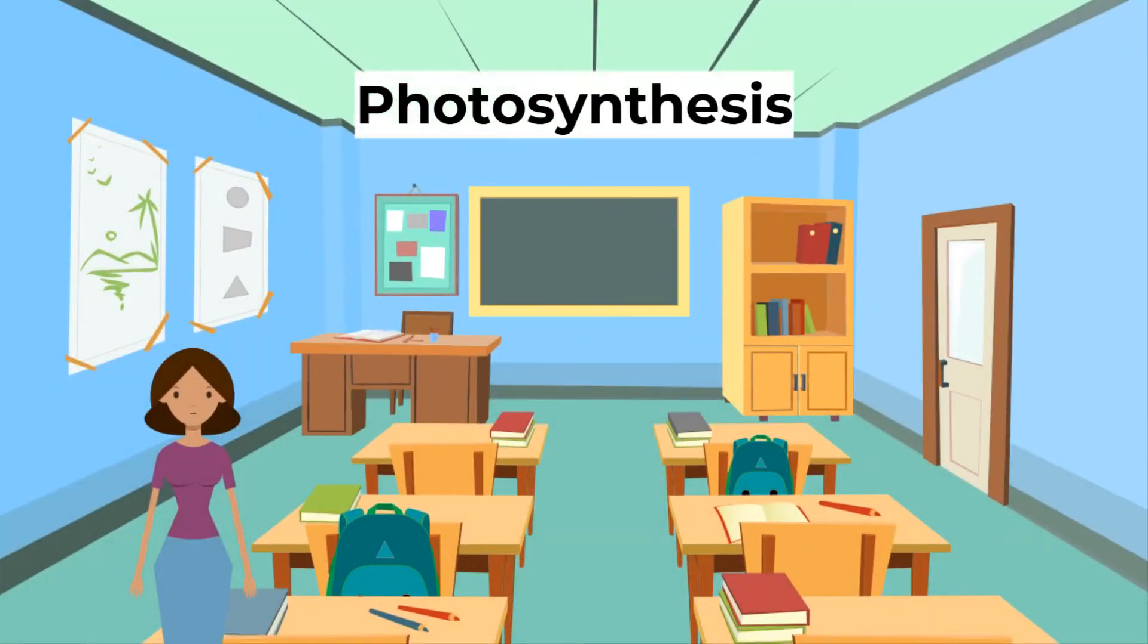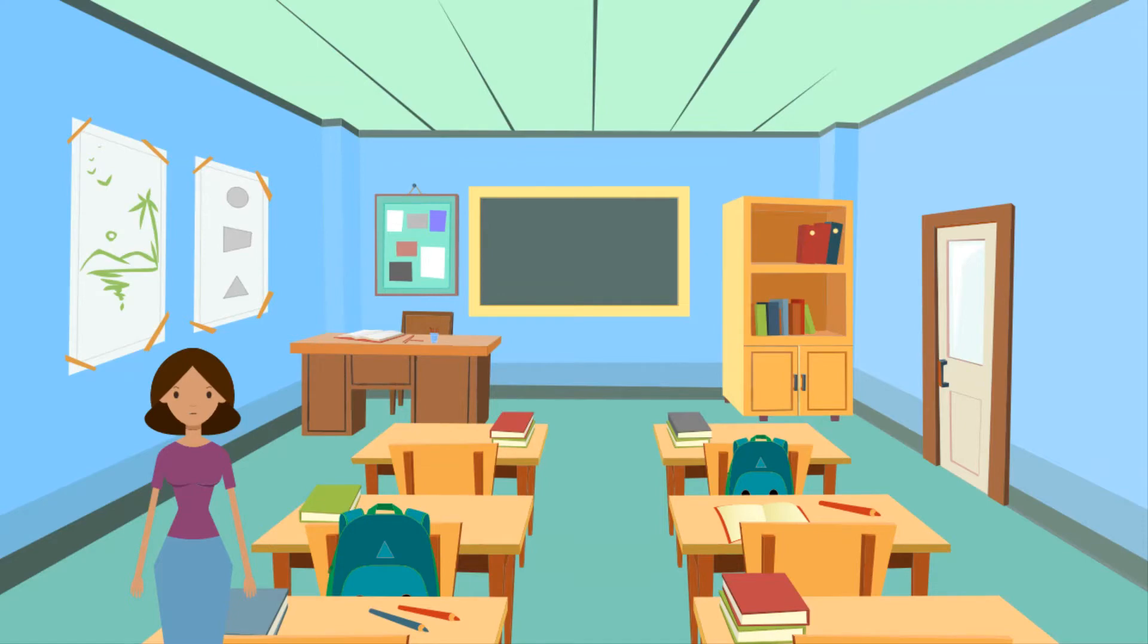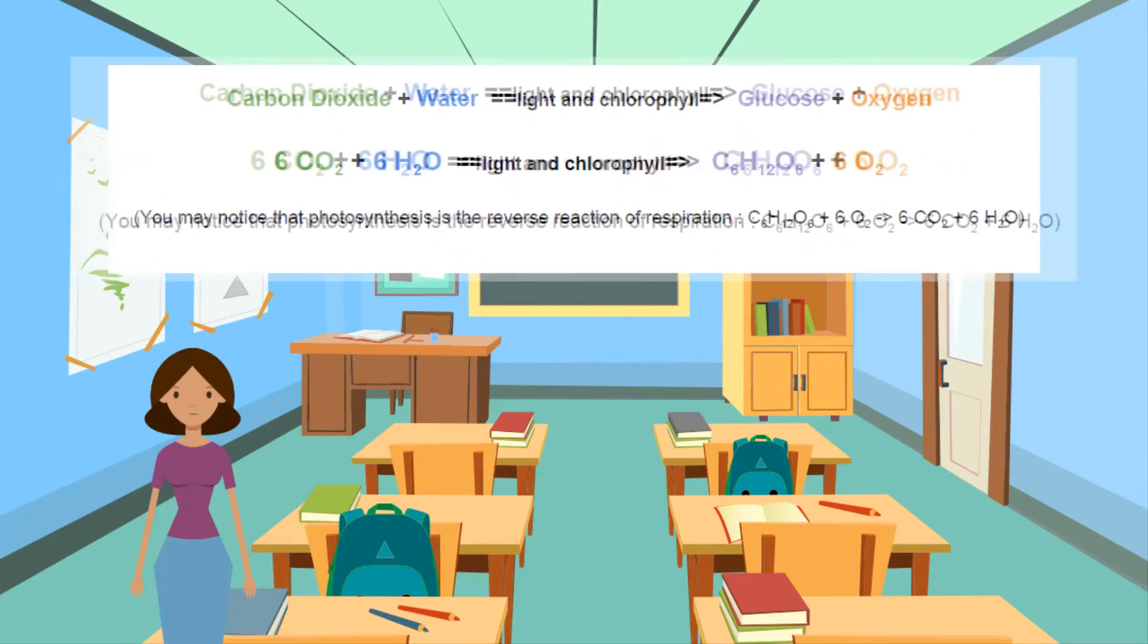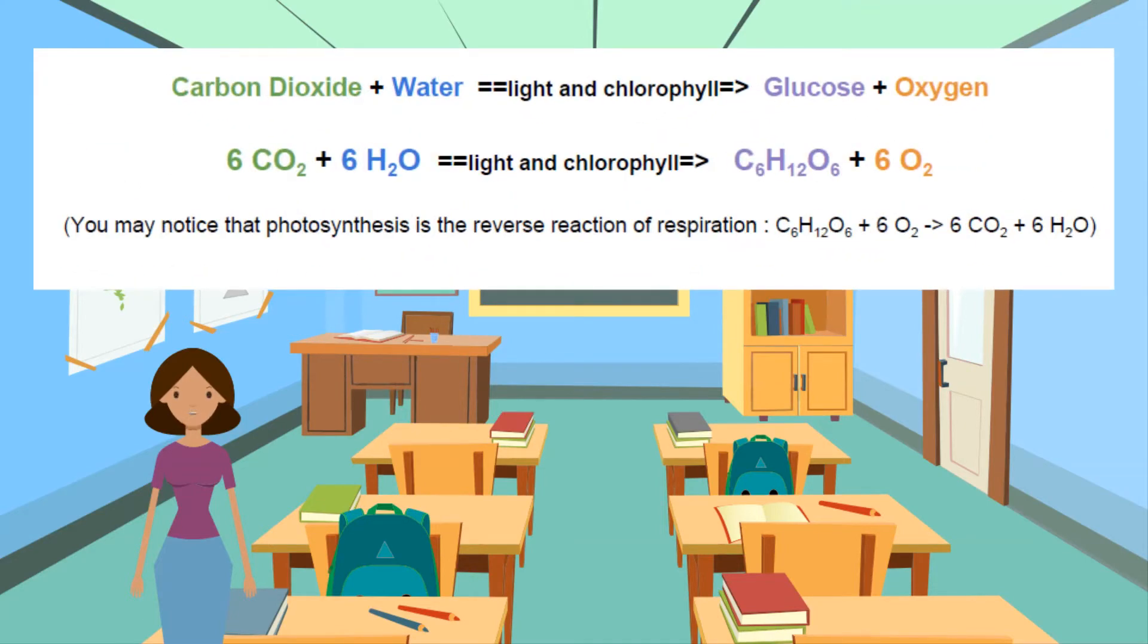Firstly, for today we are going to be looking at photosynthesis. You need to know the definition of photosynthesis: this is the fundamental process by which plants manufacture carbohydrates from raw materials using energy from light. Photosynthesis is the reaction that happens in chloroplasts in plant cells.